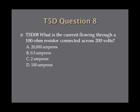Question 8: What is the current flowing through a 100 ohm resistor connected across 200 volts? A. 20,000 amperes. B. 0.5 amperes. C. 2 amperes. Or D. 100 amperes.